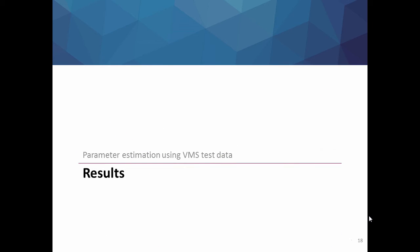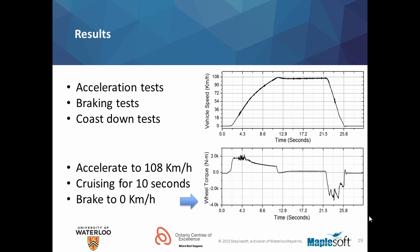The data obtained from the VMS testing are used for parameter estimation for dynamic tire behavior. We have used different tests to measure forces and moments for different vehicle maneuvers. We have performed acceleration tests, braking tests, and coast down tests. The results of an acceleration test where the car was accelerated to 108 kilometers per hour and then decelerated to zero is shown on the right. The vehicle speed and the wheel torques are shown in this slide.